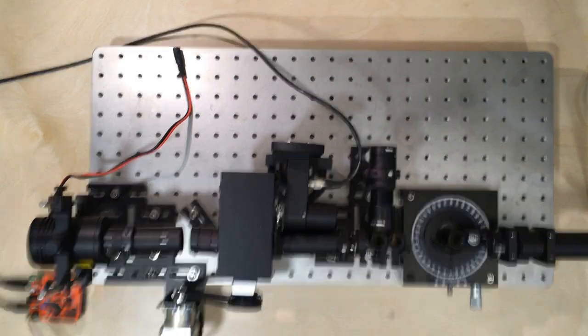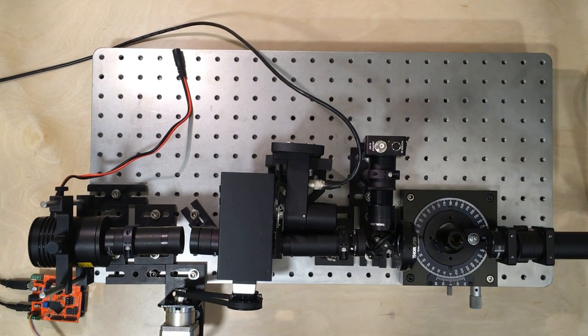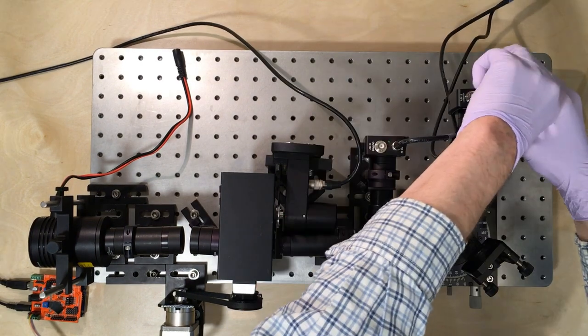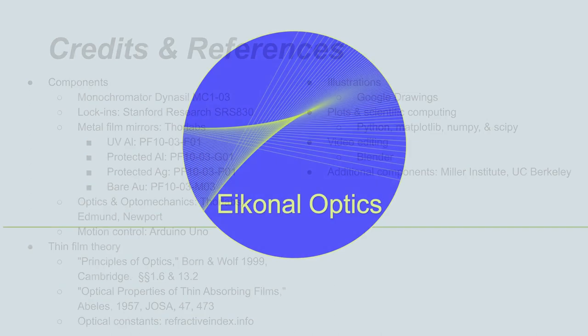Although we focused on mirror characterization in this video, this technique can be used to measure the transmission and reflection properties of a wide range of components, including filters, beam splitters, polarizers, windows, and gratings. We may investigate these in follow-up videos, so please stay tuned if you're interested. Thanks for watching.